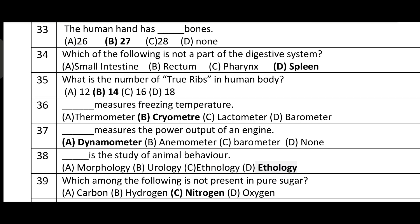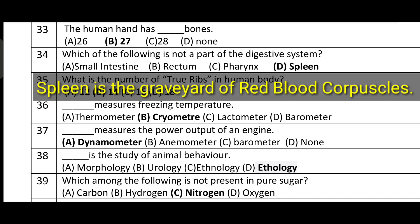Question number thirty-three: the human hand has 27 bones. Option B is correct. Question number thirty-four: which of the following is not a part of the digestive system? Small intestine, rectum, and pharynx are all parts of the digestive system. But spleen is NOT part of the digestive system — spleen is the graveyard of red blood cells.